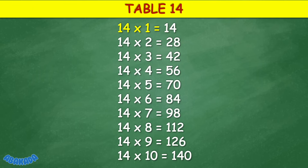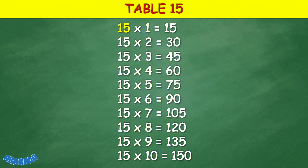Table 14: 14 times 1 equals 14, 14 times 2 equals 28, 14 times 3 equals 42, 14 times 4 equals 56, 14 times 5 equals 70, 14 times 6 equals 84, 14 times 7 equals 98, 14 times 8 equals 112, 14 times 9 equals 126, 14 times 10 equals 140.